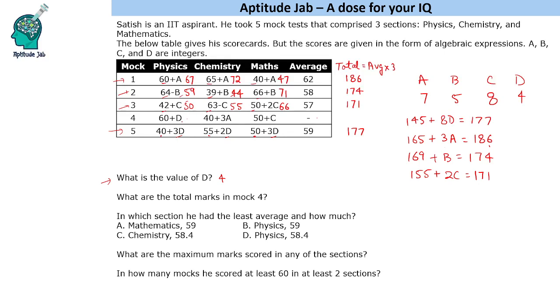D is 4. This will be 64. This is 3 times A that is 21, 61 and 61 and this is plus C 58. And 40 plus 3D is 52. 55 plus 2D is 63. 50 plus 3D is again 62.